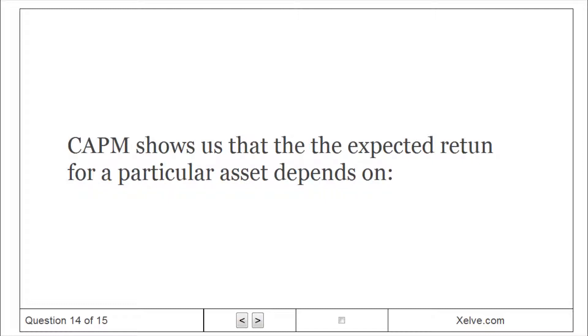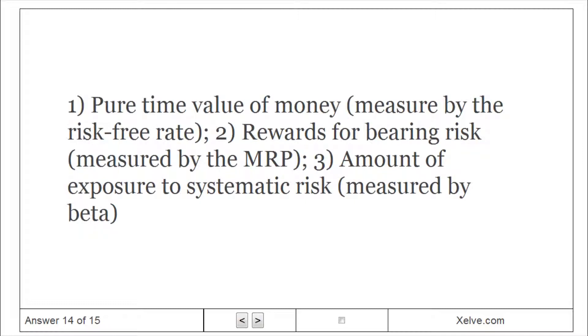CAPM shows us that the expected return for a particular asset depends on: 1. Pure time value of money, 2. Rewards for bearing risk, 3. Amount of exposure to systematic risk.